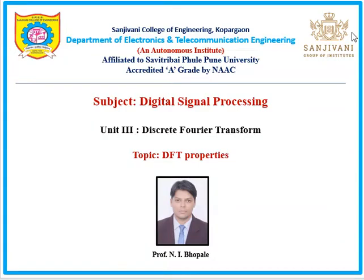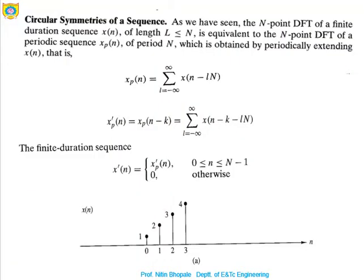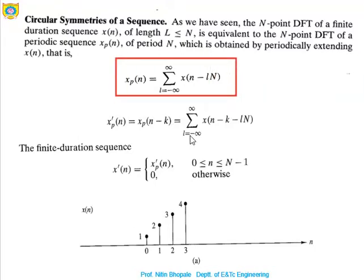Hello students, welcome to Digital Signal Processing. This time we are discussing the properties of the DFT. Let's discuss the property of circular symmetries of a sequence. There is one sequence xp(n) which is the periodic sequence. xp(n) is given by an expression in terms of x(n) shifted by some amount, let's say l times n.